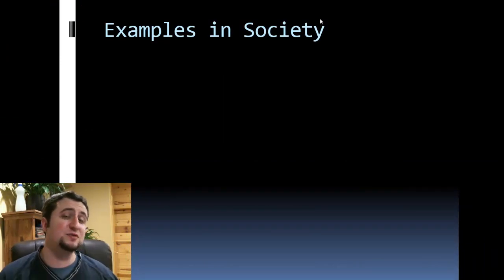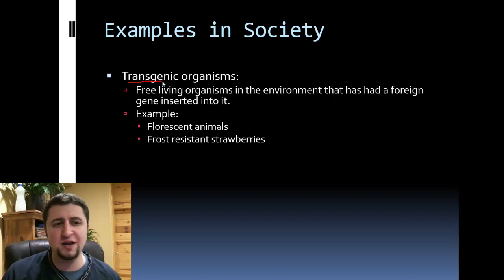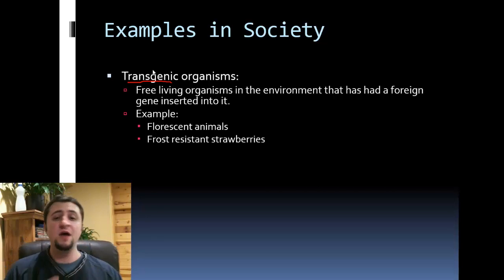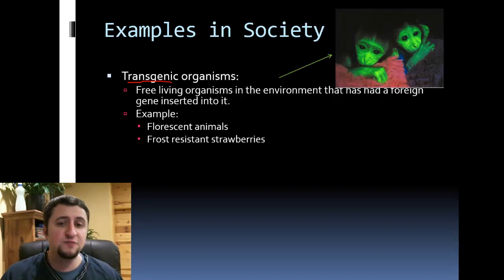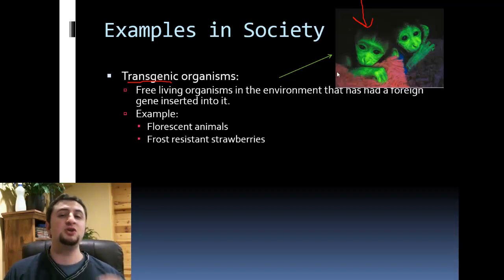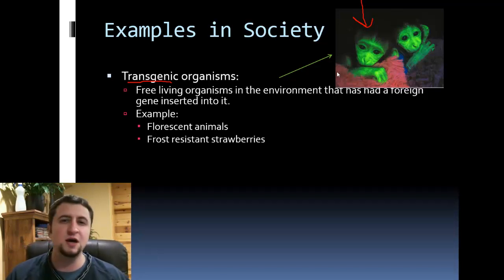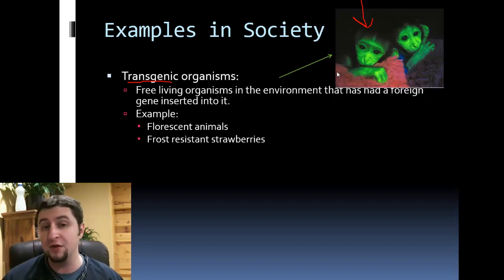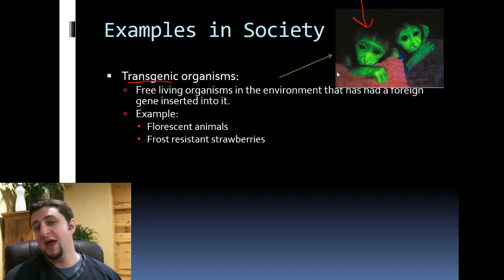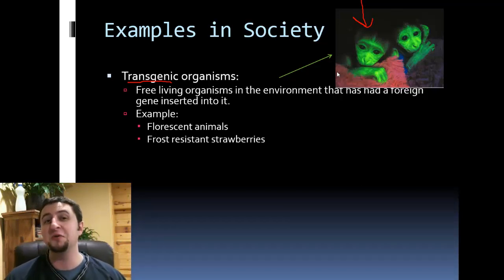We find lots of examples of recombinant DNA in our own society. For example, there are transgenic organisms — living organisms in our environment that have had foreign DNA inserted into them. One example is fluorescent animals. This monkey can actually glow in the dark. We took a gene from a glowing animal such as a jellyfish and inserted that gene for glowing into monkeys. As bizarre as that is, it's actually a real thing we've done.